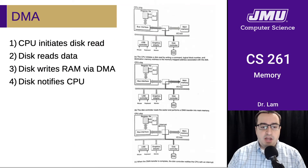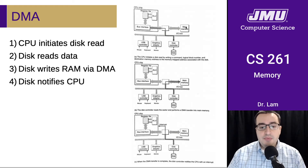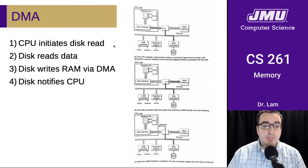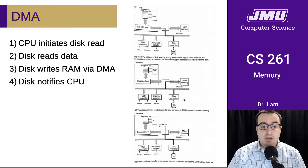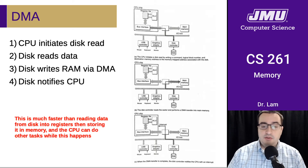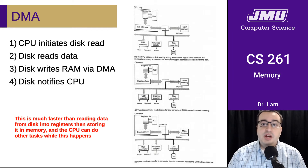Let's talk about direct memory access. Typically, to move a value from disk to main memory, the values would need to be read into the CPU and then written into main memory. But the CPU doesn't really need to be involved. If your hardware supports direct memory access, which is pretty ubiquitous now, the CPU will simply initiate the disk read, and then the disk controller and the memory controller can communicate directly to move the data. Once the memory transfer is done, the disk will notify the CPU that it's finished. This is much faster and has the added benefit that the CPU can be doing other things while this is going on.